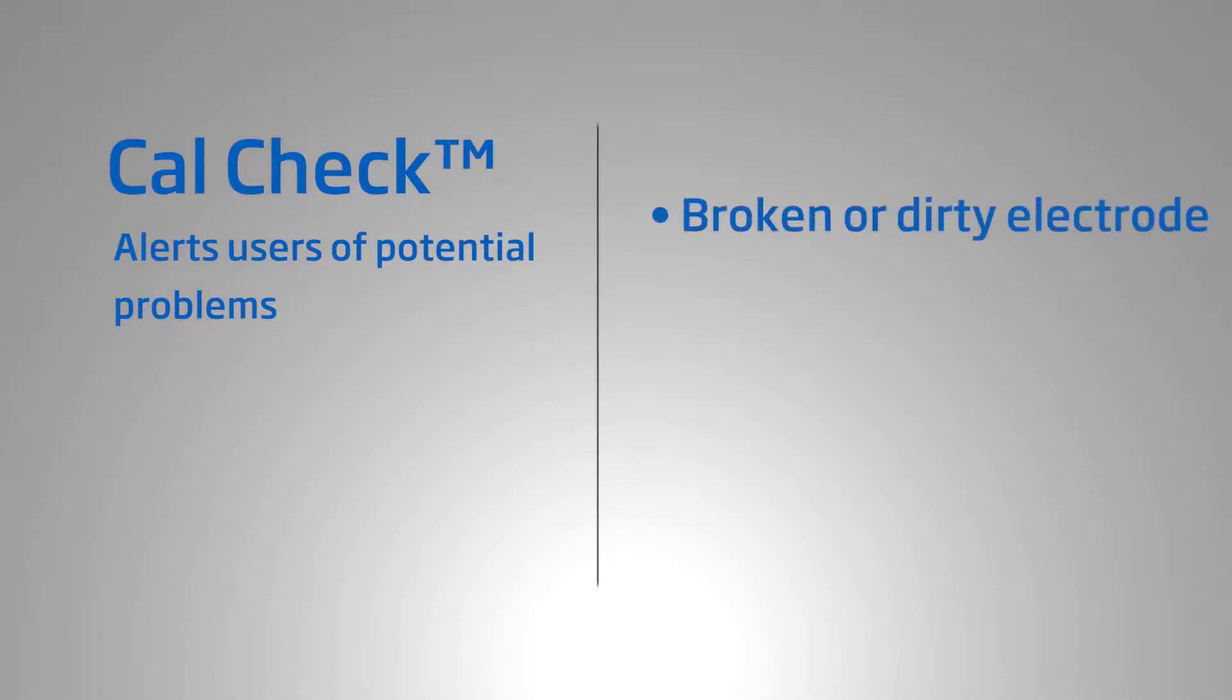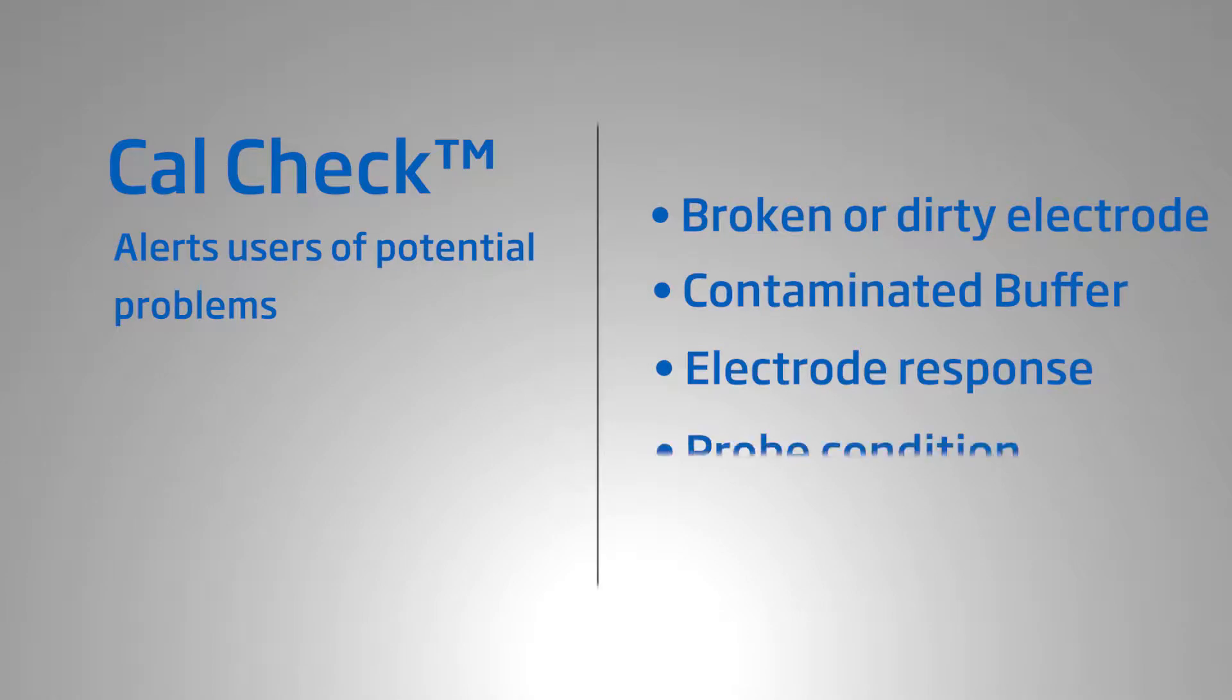A unique feature this meter offers is Hanna's CalCheck. CalCheck alerts users to potential problems during the calibration of the pH electrode like a broken or dirty electrode, contaminated buffer, electrode response time, and the overall probe condition as a percentage that is based on the offset and slope characteristics.